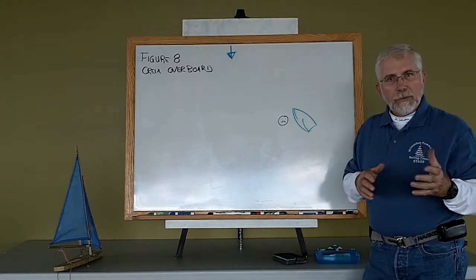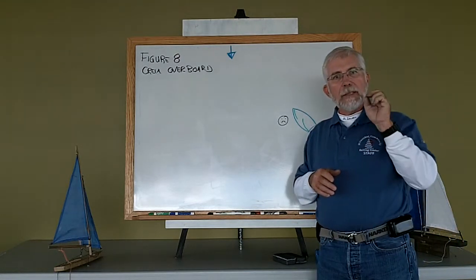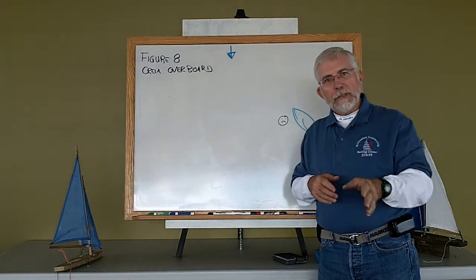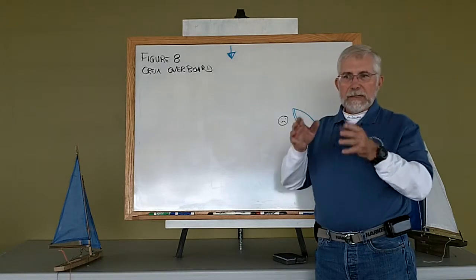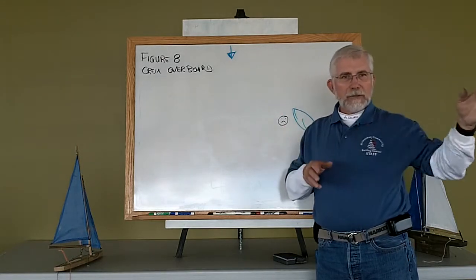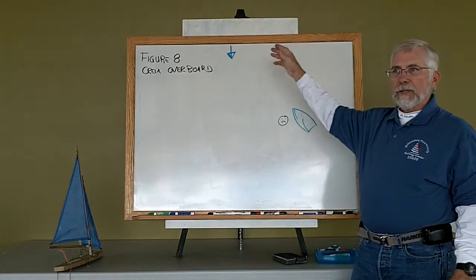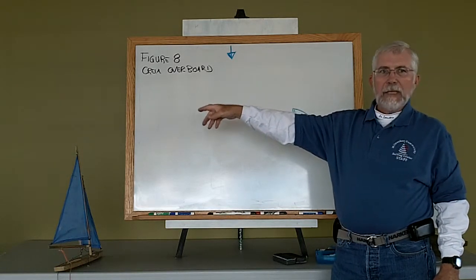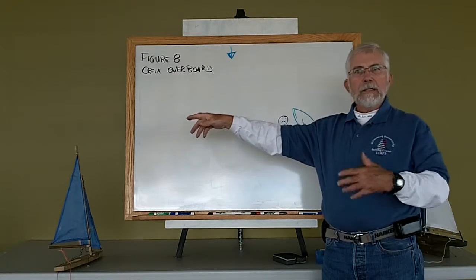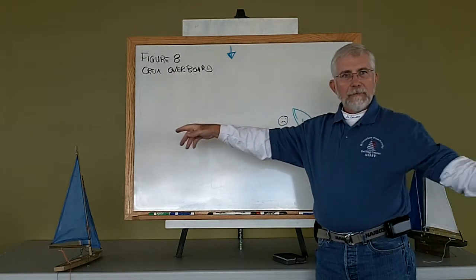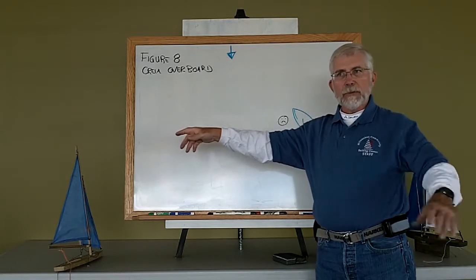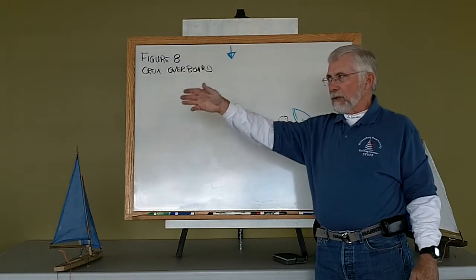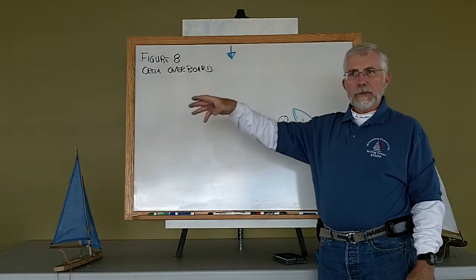Then the third thing you do is you appoint a spotter. You assign somebody to spot for them and you make it very clear that you expect them to spot. Sally, spot. Ralph, spot. Their job would be then to keep a hand pointed at that crew that's overboard all the time, not taking their eyes off the crew, and communicating where they are in relationship to the boat.